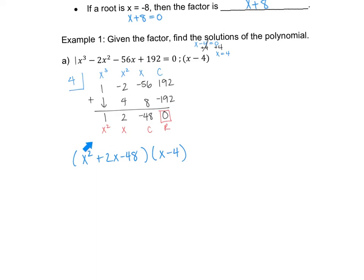Since the remainder is 0, x minus 4 is confirmed as a factor. What's left over is 1x squared plus 2x minus 48. Now I need to factor this quadratic further. Two numbers that multiply to give negative 48 and add to give 2: 8 and negative 6 work — positive 8 times negative 6 is negative 48, and 8 plus negative 6 gives positive 2 in the middle. So the factors are x plus 8 and x minus 6.